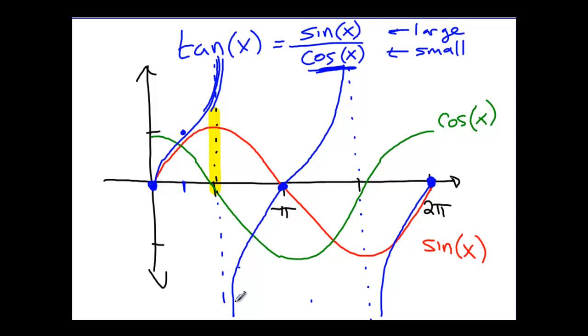Notice that at 3π/2, so at 3π/2 here, sine and cosine again have the same value. Sine and cosine again have the same value. This time they're both negative, but when we divide two negatives, we end up with a positive. And so again, we expect to have a value of about positive 1 there and that seems consistent.